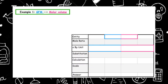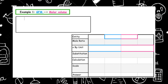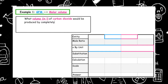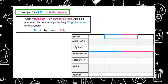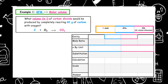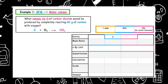In this example, we are going to look at the relationship between GFM and the molar volume. The question asks: what volume in litres of carbon dioxide would be produced by completely reacting 60 grams of carbon with oxygen? The balanced equation has been given. We first take down the entities — the things from the balanced equation that we have been given information about. We're given information about carbon and carbon dioxide.